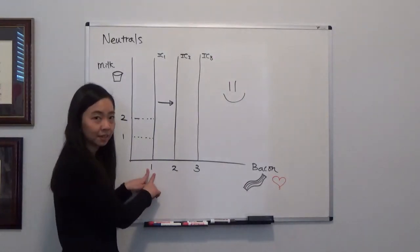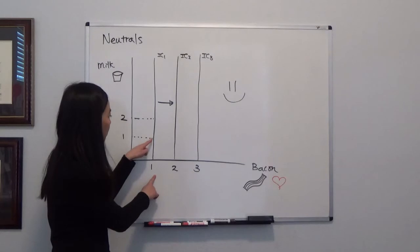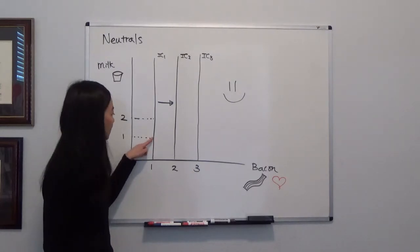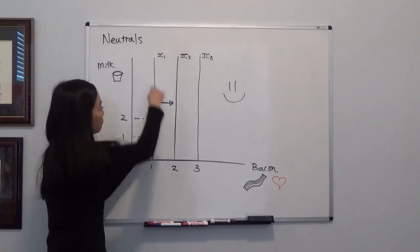Suppose he has one slice of bacon and if you give him one cup of milk, that is his utility level on indifference curve 1.